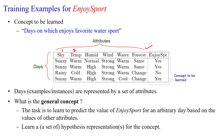The attributes are: sky, temperature, humidity, wind, water, and forecast. The last column is the target concept which is going to be learned by our learning system. Each attribute has its own values — sky is having value sunny for training example 1 and rainy for training example 3. Temperature is having warm for the first two examples and cold for the third. Humidity is also having two different values: normal and high.